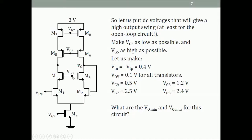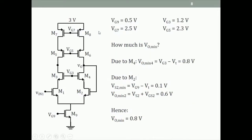Vg3 determines the source voltage of M3 and M4, which in turn determines how high the gate voltages of M1 and M2 can go. With these numbers, we now ask: what are the minimum and maximum output voltages while keeping all transistors in saturation? Finding both Vo_min and Vo_max gives us the output voltage swing. Please pause and work this out before continuing.